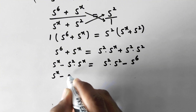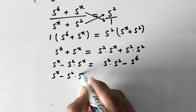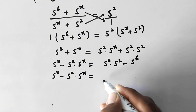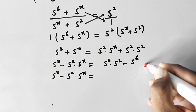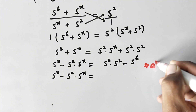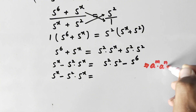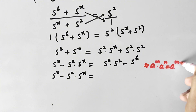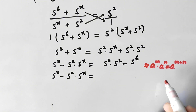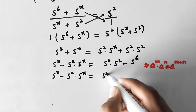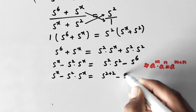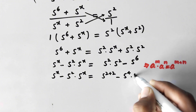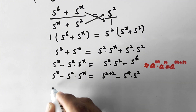We can apply the exponential property that a to power m times a to power n equals a to power m plus n. So 5 square times 5 square becomes 5 to power 2 plus 2, and 5 to power 6 can be written as 5 to power 4 times 5 to power 2.